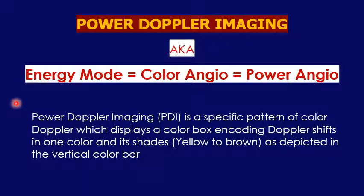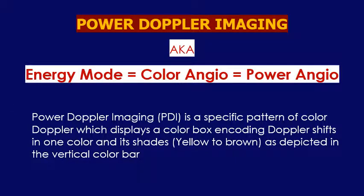Power Doppler is considered a specific pattern of color Doppler — it has a color box and a color map, sharing the same pattern. The difference is that color Doppler uses autocorrelation to process the frequency shift, whereas Power Doppler processes the strength of the reflected waves that carry the Doppler shift.